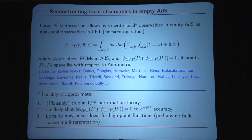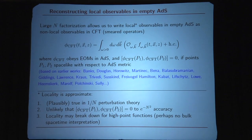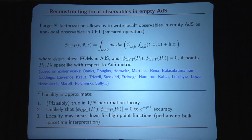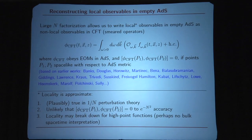I want to emphasize that the locality of this construction is approximate. It is probably true in 1/N perturbation theory, but we have no reason to expect that the commutator for spacelike points will be equal to zero at the exponential e^{-N²} level. Moreover, the locality of this operator is based on large N factorization, so if you consider a very complicated correlator — an N²-point function — you have no reason to expect that it has a representation in the bulk in terms of a local quantity. In any case, up to these caveats, we can write down local bulk fields in AdS, and we want to do the same thing in the presence of a black hole.